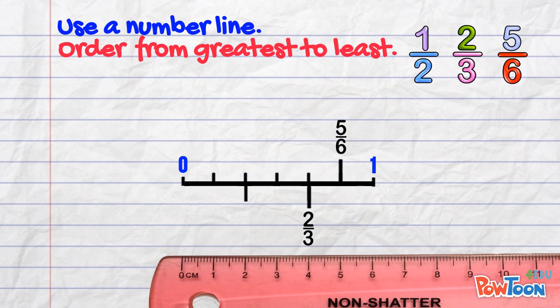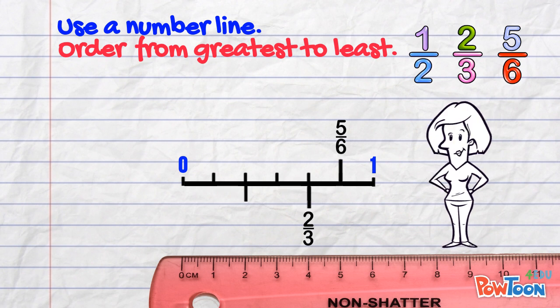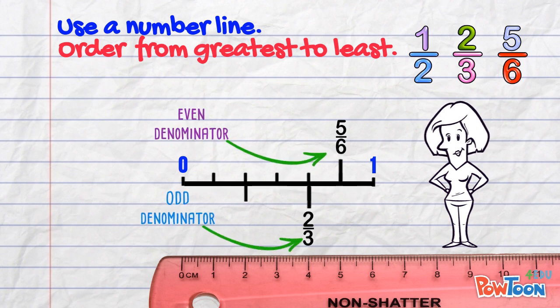Again, mark it very clearly. And I still have to show 1 half. But I've used both edges of the number line. I've used the top edge for an even denominator and the bottom edge for the odd denominator.